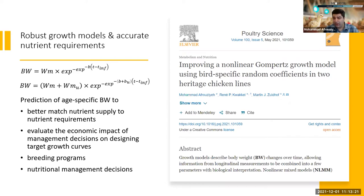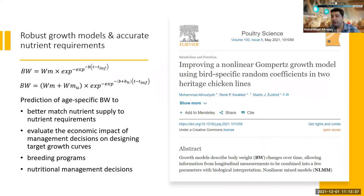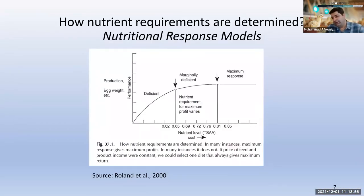When you see papers with heavy titles like 'nonlinear compared growth models,' you need to think about how we can use them practically. The ultimate goal of defining phase feeding is to define nutrient requirements. This graph — which is the fundamental basis of my talk today — is where I'm going to discuss maximum profit feed formulation.